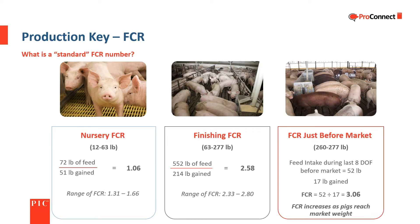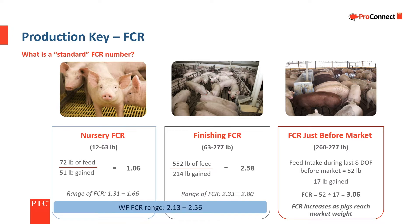Feed conversion changes through the pig's growth cycle. In the nursery, a general range is between 1.31 and 1.66 pounds of feed per pound of gain. In finishing, the general range is between 2.33 and 2.8 pounds of feed per pound of gain, or nearly twice as high as the nursery phase. In a wean-to-finish setting, a range of 2.13 to 2.56 pounds of feed per pound of gain is typical.